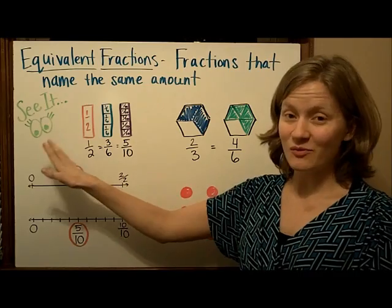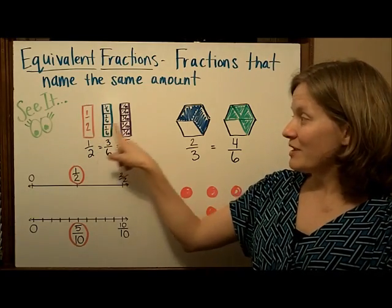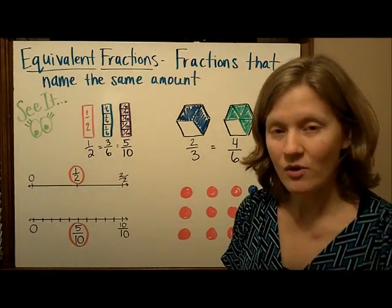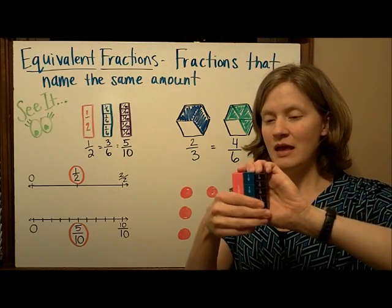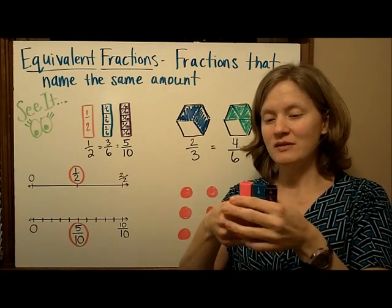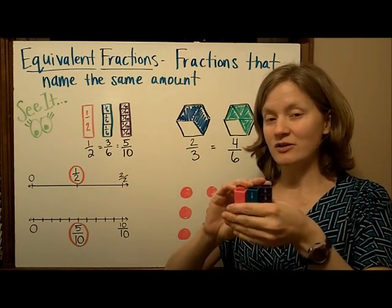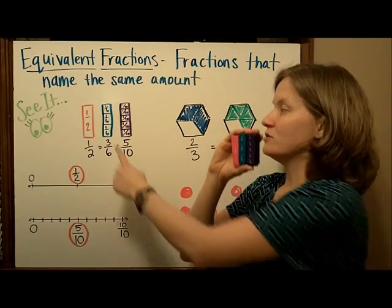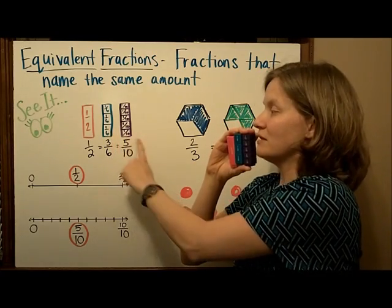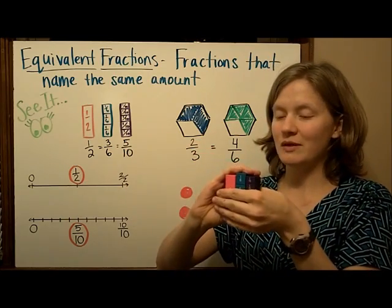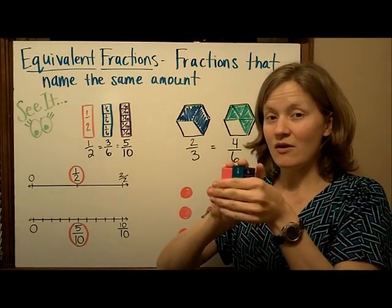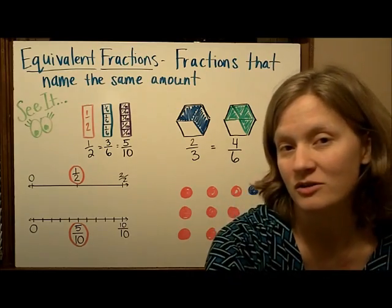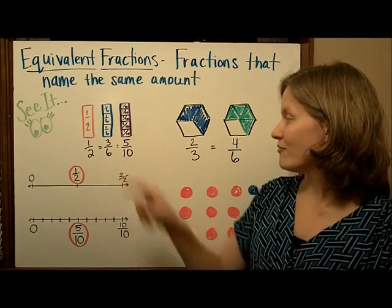Let's look at a few examples that we can easily see. When we compare fraction towers, we can look at the one-half piece, and there are many different ways in this set of fraction towers to represent parts that are equal to one-half. We can show three-sixths and we can show five-tenths. When we compare these pieces, they are all the same height, which means that they are equivalent fractions or equal to one-half.